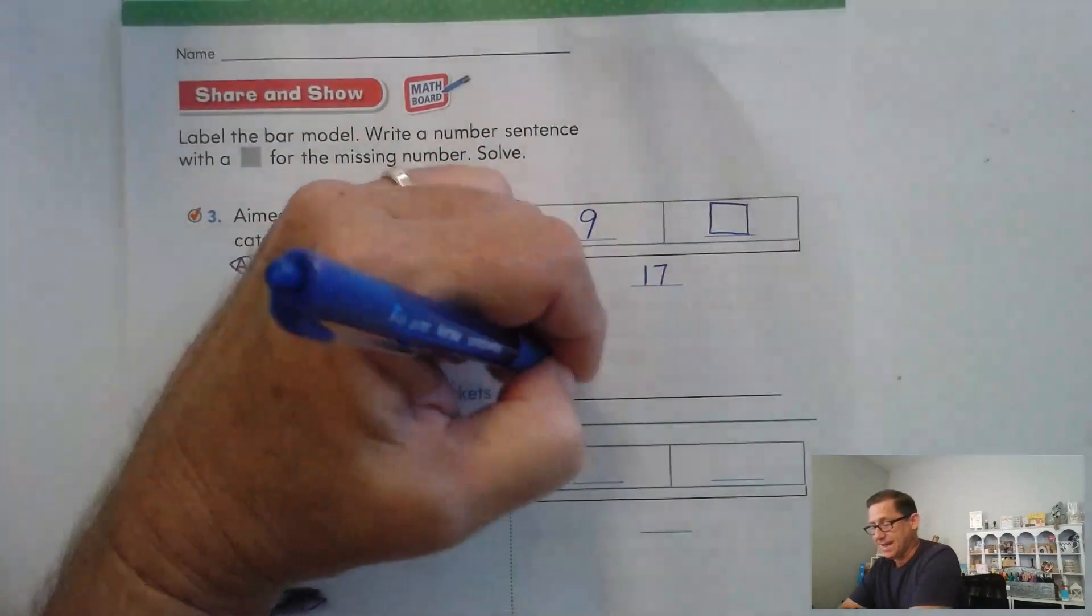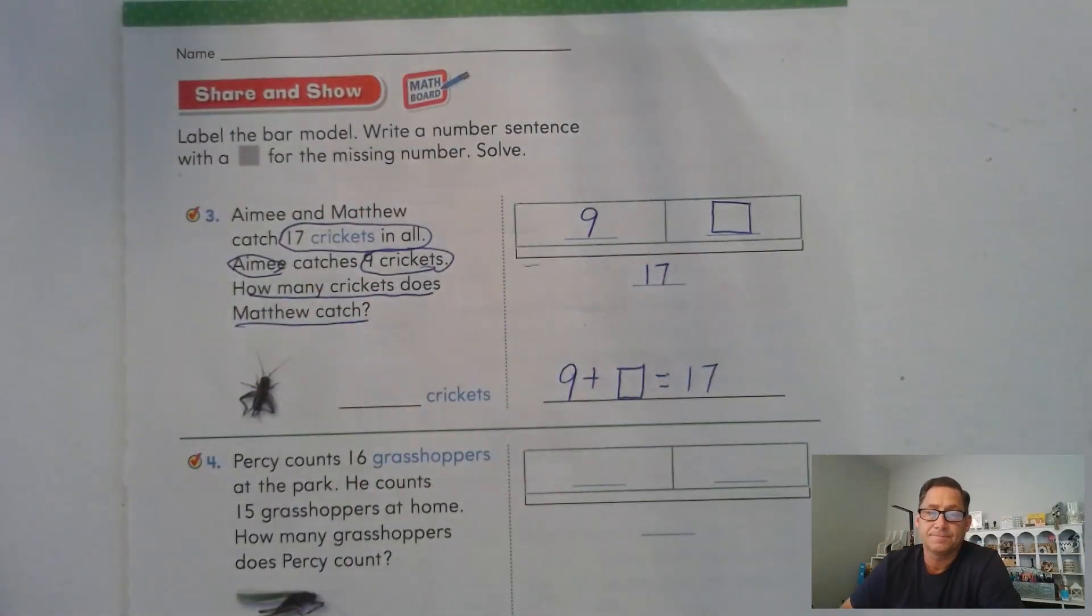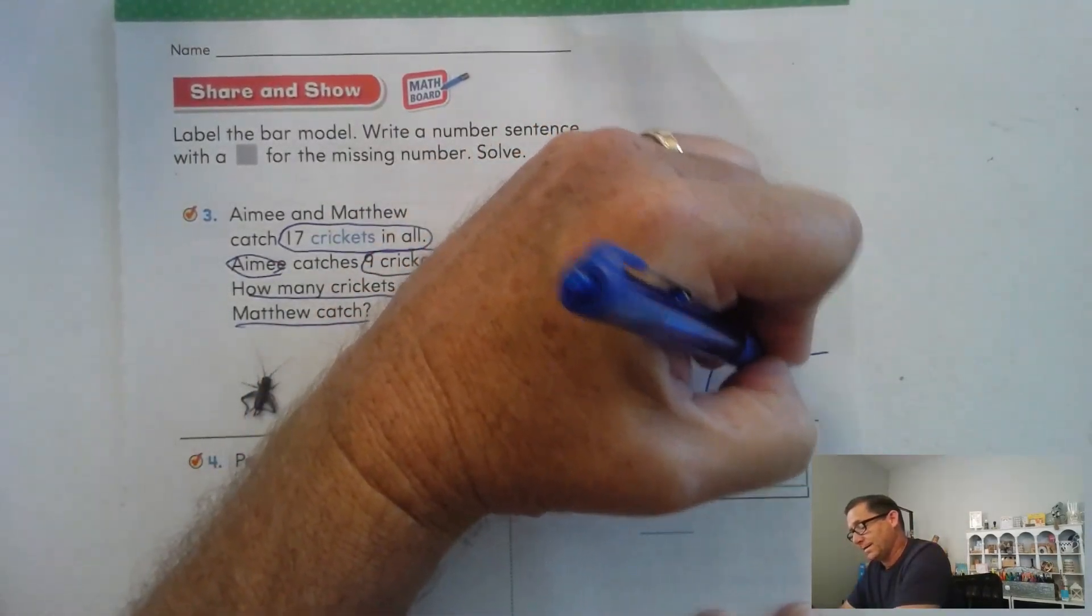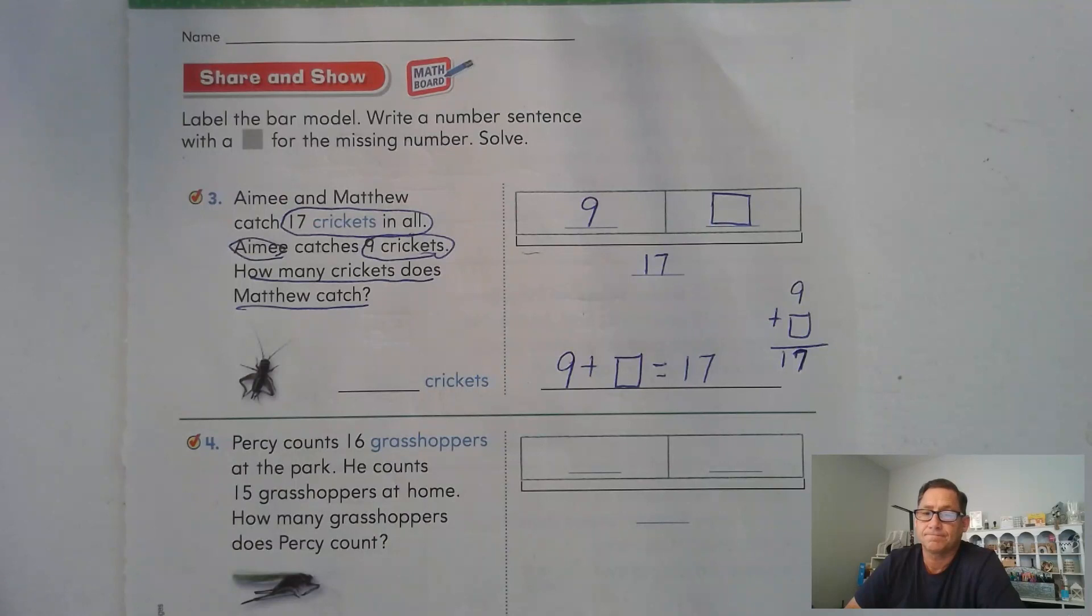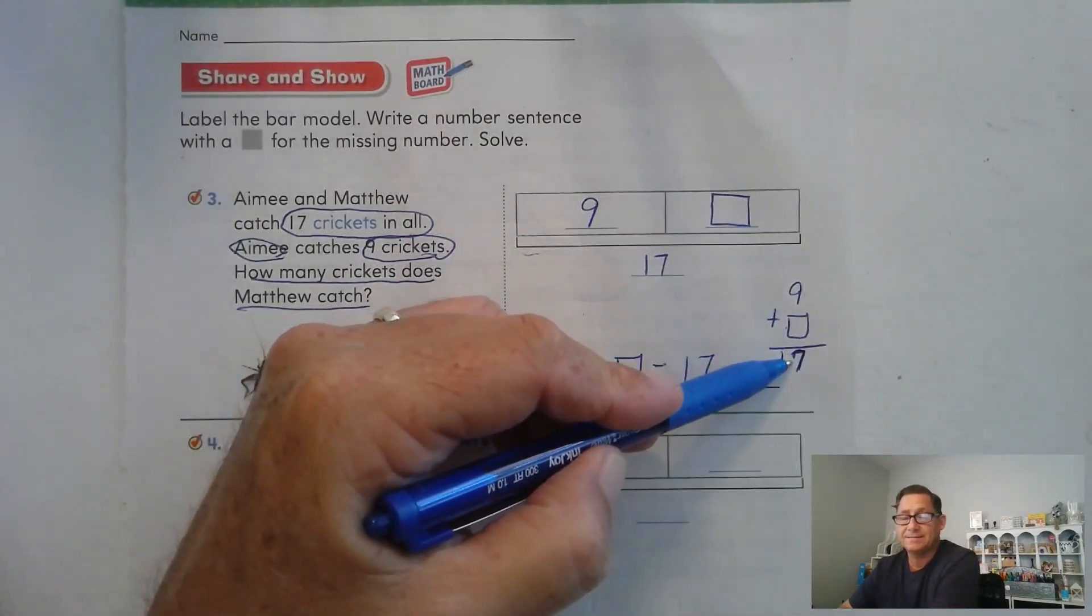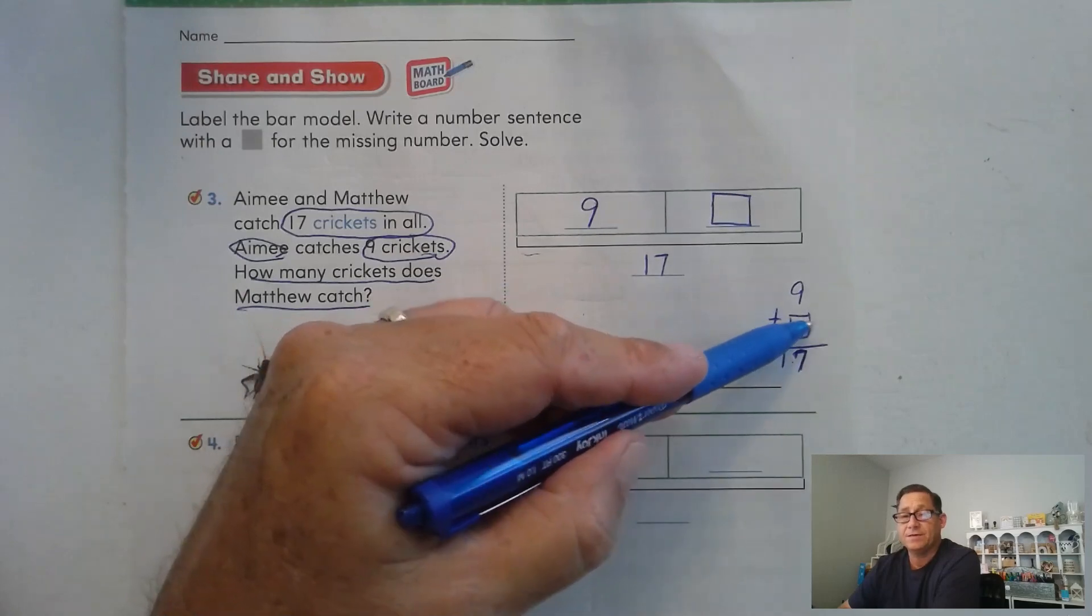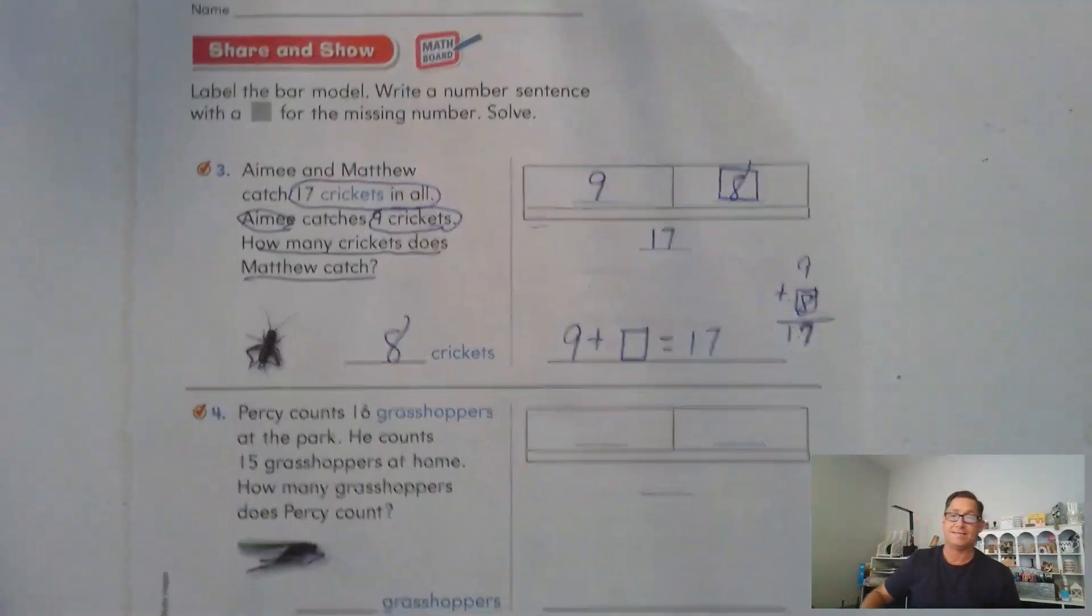What's our number sentence? 9 plus something will equal 17. 9 plus what is 17? The same thing as 17 minus 9. So 9, if I add 1, I'm at 10. 10 plus what is 17? 7. So 9 plus 1 gives us 10. 10 plus 7 gives us 17. So 7 plus 1 is 8. He found 8 crickets.